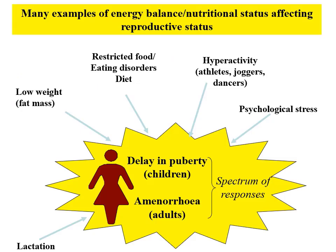There are many examples of how energy balance links with reproduction in humans, particularly obvious in women and girls. A delay in puberty occurs in children with very low weight, restricted food, eating disorders, or if they engage in high levels of activity. The same things can cause disruptions of the menstrual cycle in adults.